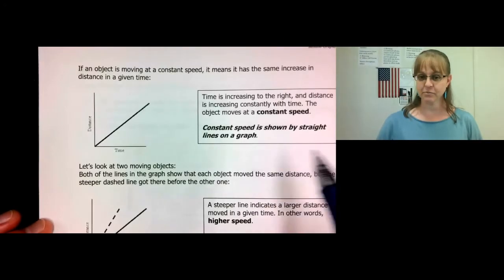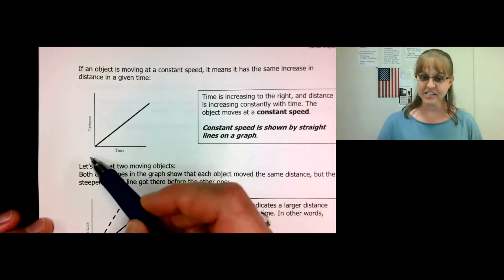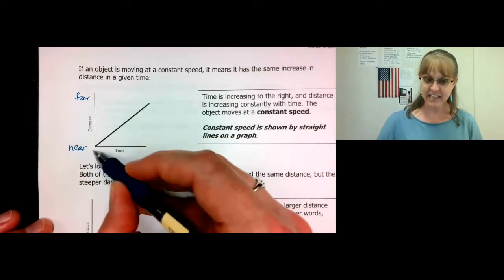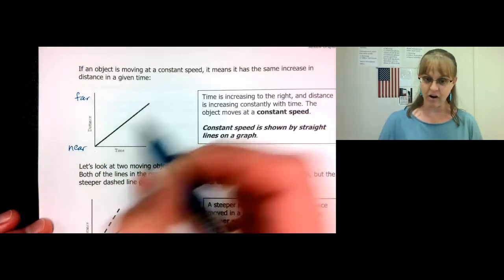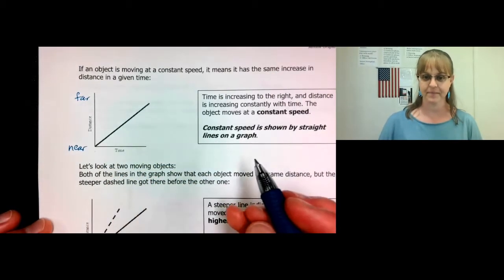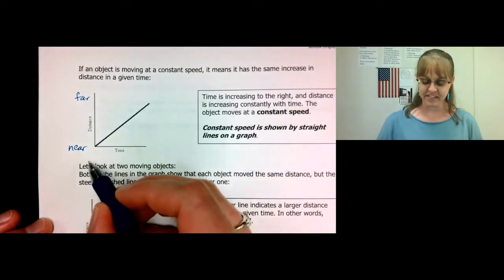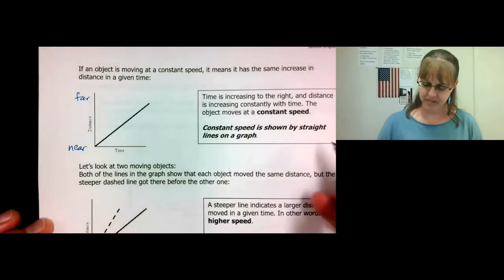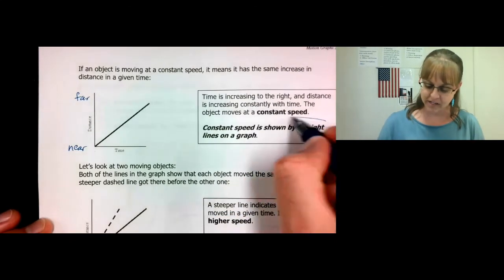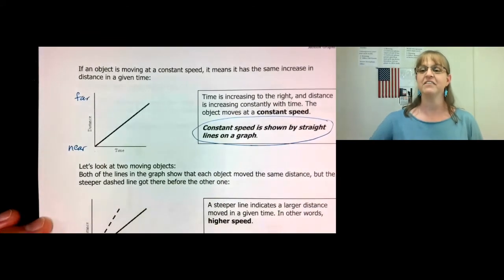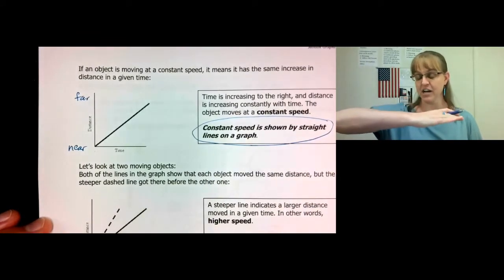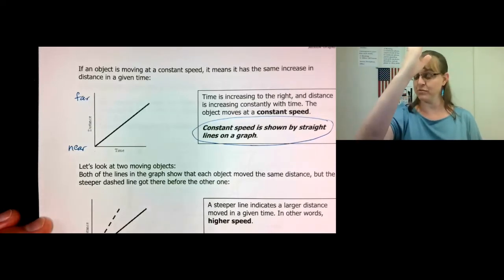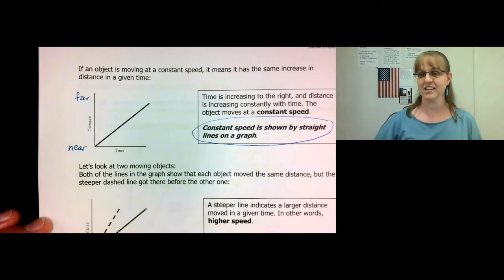If an object is moving at a constant speed, then the slope of the line will be constant. So this object is steadily moving from near to far as time goes on. This constant slope means we have a constant speed. Constant speed is shown by a straight line on the graph. If the line is flat, it's a constant speed of zero. If it's sloped a little bit, it's a slow constant speed. And if it slopes steeply, it's a fast constant speed.